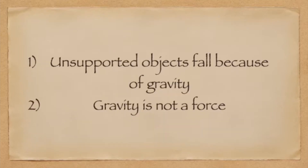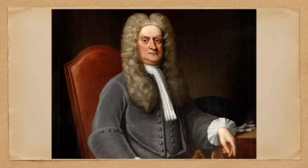Einstein's position was: unsupported objects fall because of gravity, but gravity is not a force. Of course, all of us in school were taught that gravity is a force. So how can this be? Let's look at it from the historical perspective.